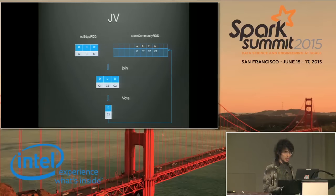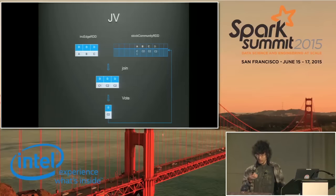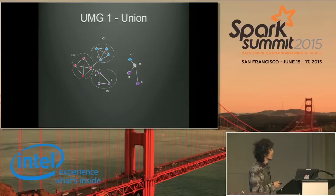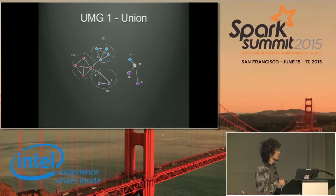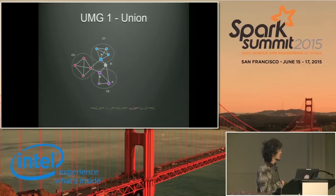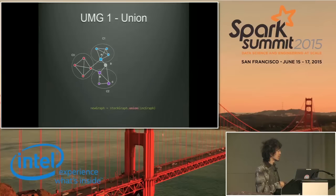So let's look at the UMG model. The UMG model consists of three steps. The first step is union. As we can see, the left part has the large graph, and there is a small graph here with the same vertices A, B, C. We first do a simple union. The sample code is like this — you may notice that GraphX doesn't have a union operator, and we'll talk about that later.